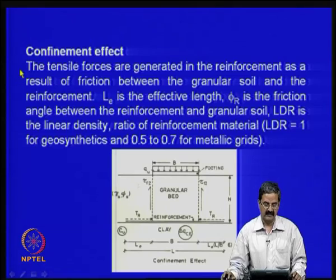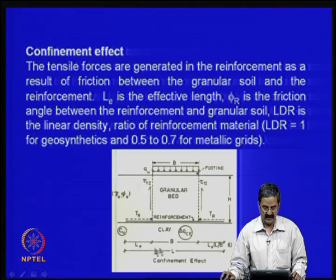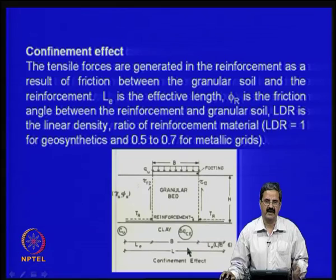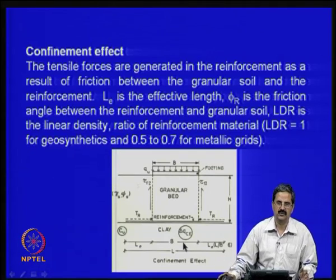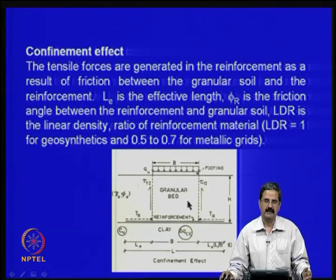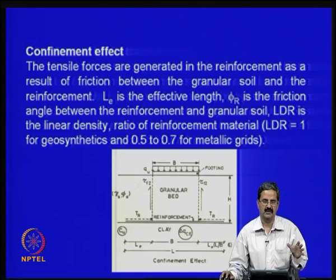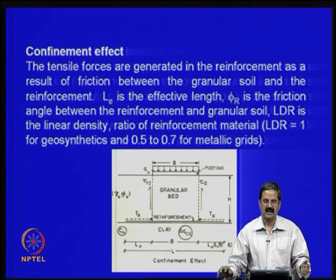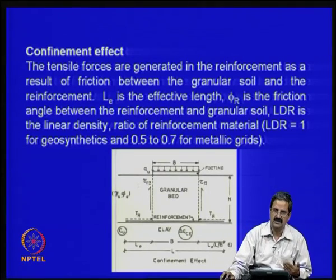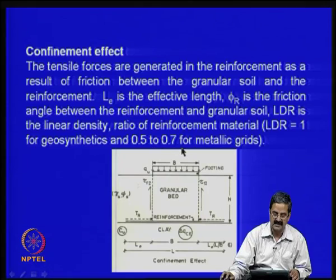For the confinement effect, tensile forces are generated in the reinforcement as a result of friction. L_e is the effective length and phi_r is the friction angle between the reinforcement and the soil — it can be 2/3 × phi typically. For geogrids, it can be 0.8, and for softer materials it can be 0.3 to 0.4. For geotextile sheets, the linear density ratio LDR equals 1, while for metallic grids or geogrids it can be somewhat less.